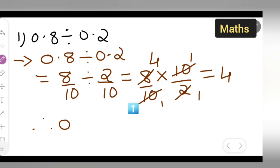Therefore, you can write a final statement saying that 0.8 divide by 0.2 is equal to 4. I hope you have understood how to divide 0.8 by 0.2. Thanks for watching.